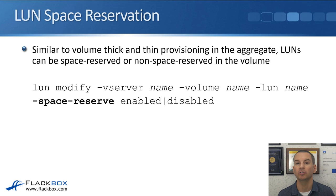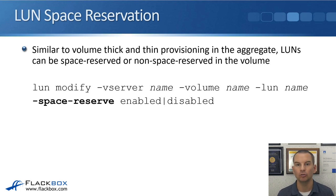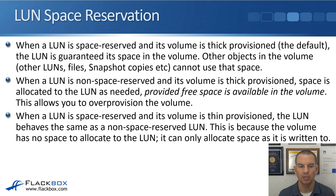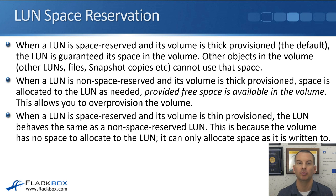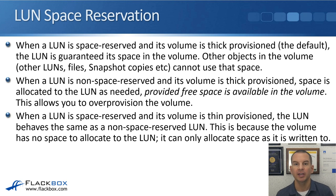The command for doing this at the command line is 'lun modify', and the field you want to use is '-space-reserve', with either 'enabled' to thick provision the LUN or 'disabled' to thin provision the LUN. When a LUN is space-reserved and its volume is thick provisioned — both the LUN and the volume are thick provisioned — that is the default.